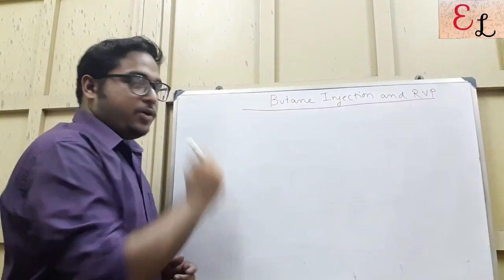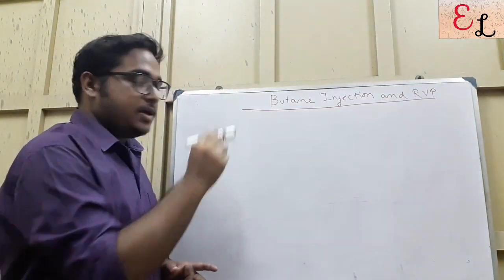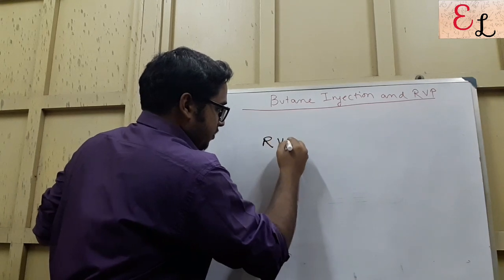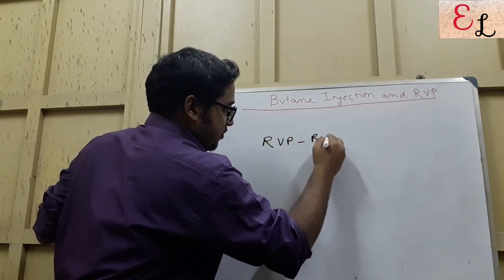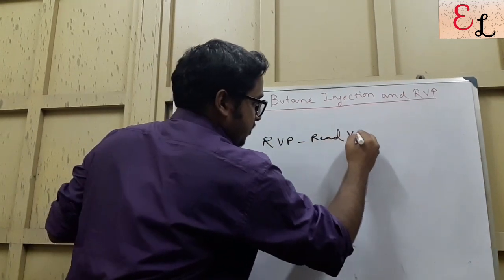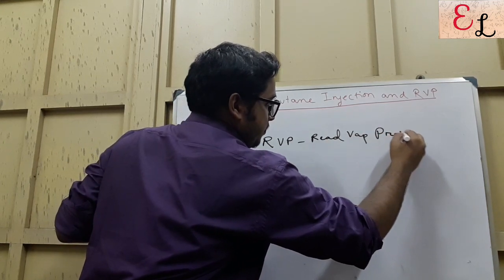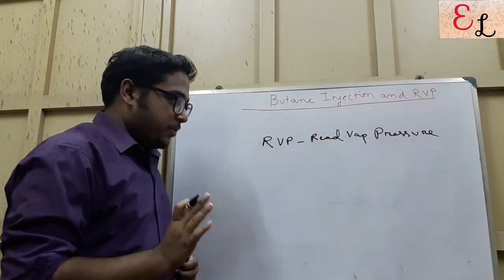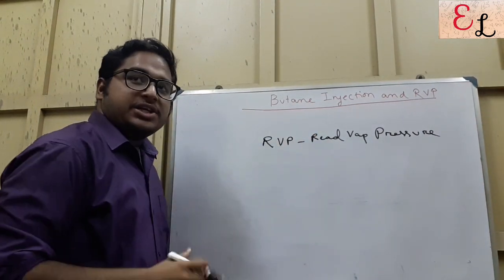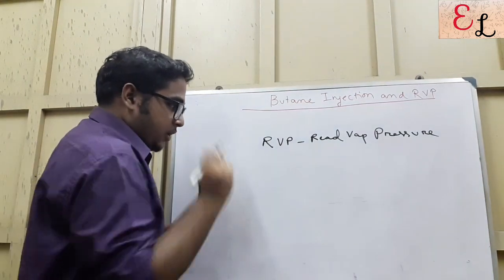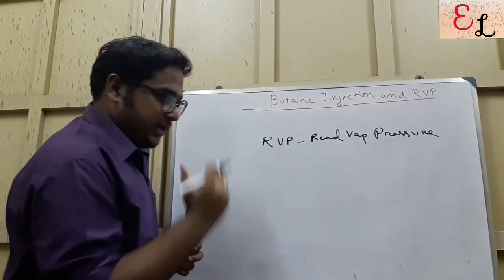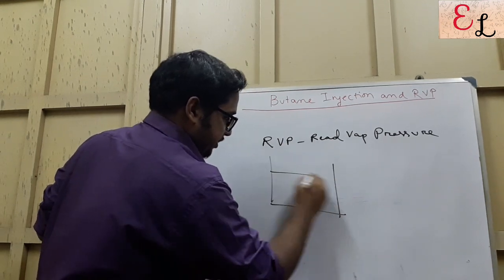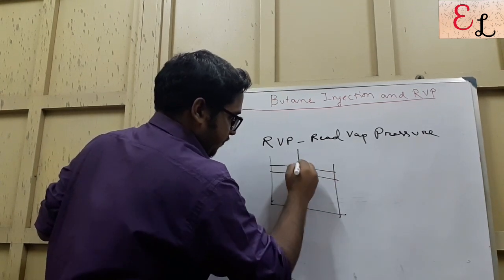Welcome everyone. Today we are going to study about butane injection and Reid Vapor Pressure. RVP stands for Reid Vapor Pressure. So what is butane injection, and when and where is it required? To clarify these things, we need to first understand the structure of the gasoline engine.